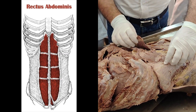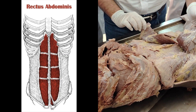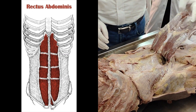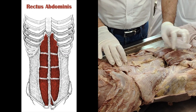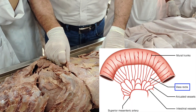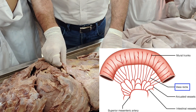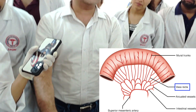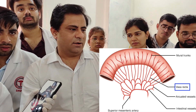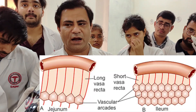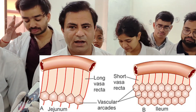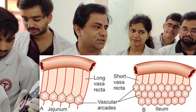Now the muscles have been reflected. You can see the recti — rectus means straight, so these are the straight muscles. The word rectus appears in many contexts; for example, earlier when discussing blood supply of the jejunum and ileum, there was the term vasa recta, which were branches of the arcus.